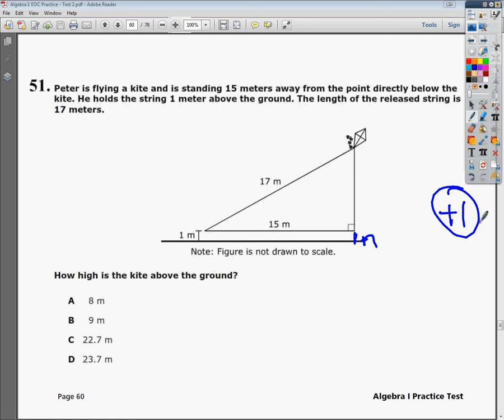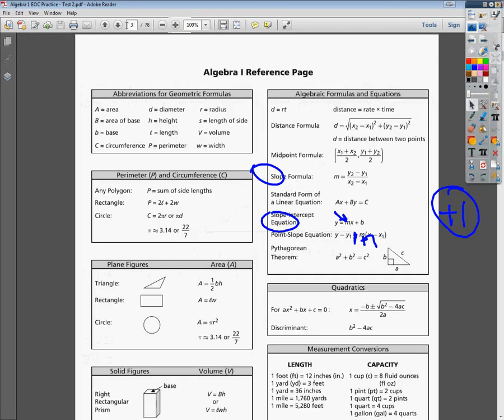I know that I have two sides of a right triangle, and when I have two sides of a right triangle, I'm probably going to use the Pythagorean theorem. I'm going to look at the formulas page here, and as you can see, right in this general section, there's a right triangle, and it says a squared plus b squared equals c squared. It is the Pythagorean theorem.